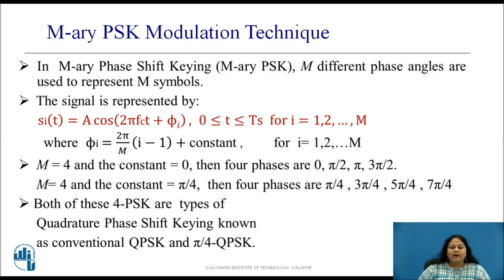For example, when M = 4 and constant = 0, the four phase shifts of the signal are 0, π/2, π, and 3π/2. And when M = 4 and constant = π/4, the four phase shifts are π/4, 3π/4, 5π/4, and 7π/4. Both of these are 4-PSK signals which are different types of Quadrature Phase Shift Keying, known as conventional QPSK and pi by 4 QPSK.